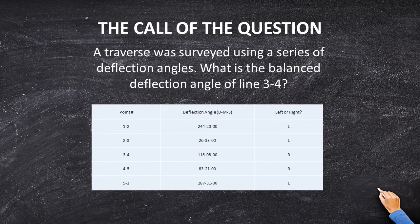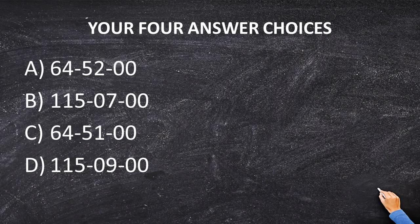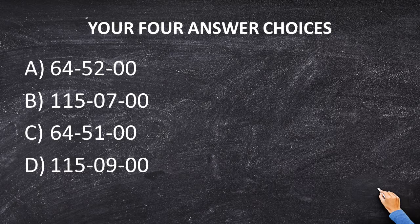To begin with, let's look at our answer choices: 64°52'00", 115°07'00", 64°51'00", and 115°09'00". We're simply going to adjust angle 3-4, which from our initial data is 115°08'00". So I bet we can eliminate 64°52' and 64°51' right off the bat, because those look more like interior angles than deflection angles. I'm going to cross out A and C.